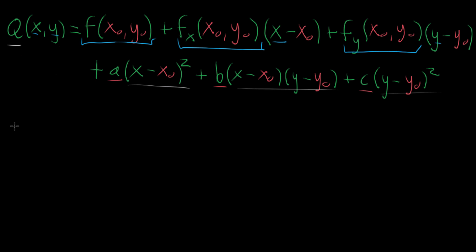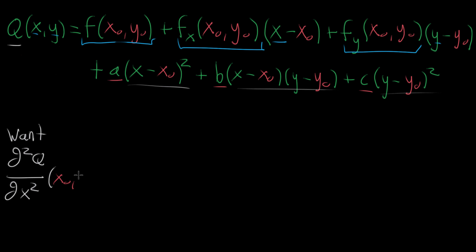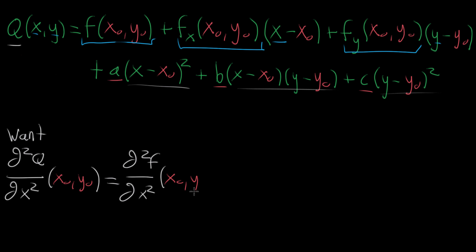In formulas, what we want is for the second partial derivatives of Q to match those of F. For example, if we take the partial derivative with respect to x twice in a row and evaluate it at the point of interest — the point about which we are approximating — it should equal the corresponding second partial derivative of F evaluated at that same point.